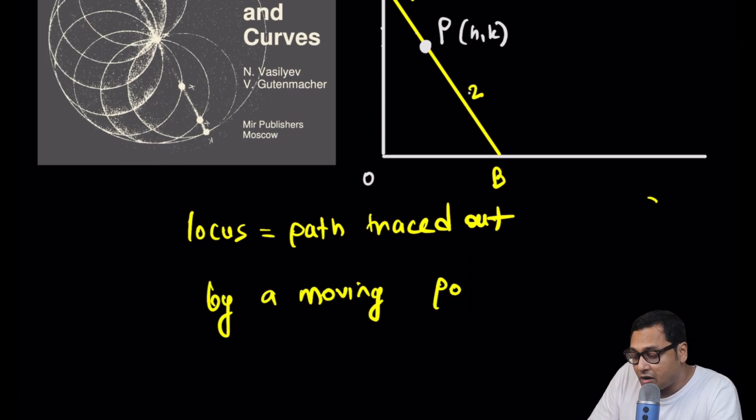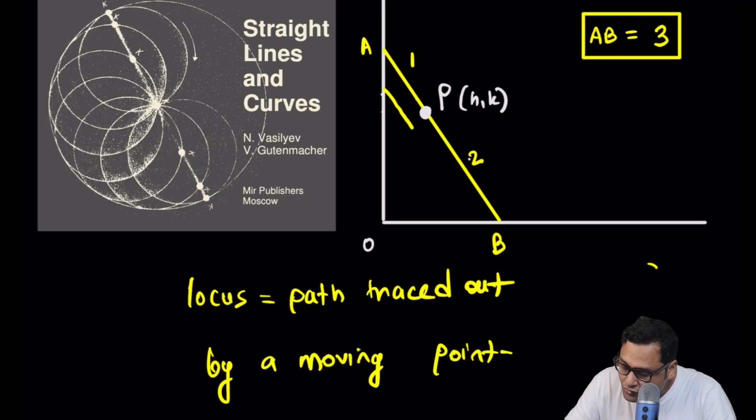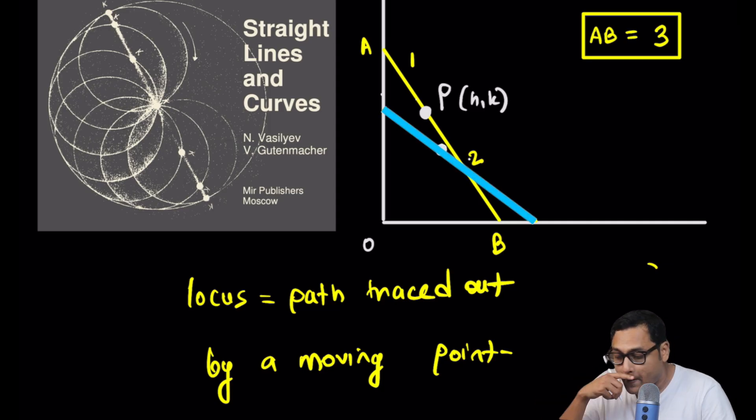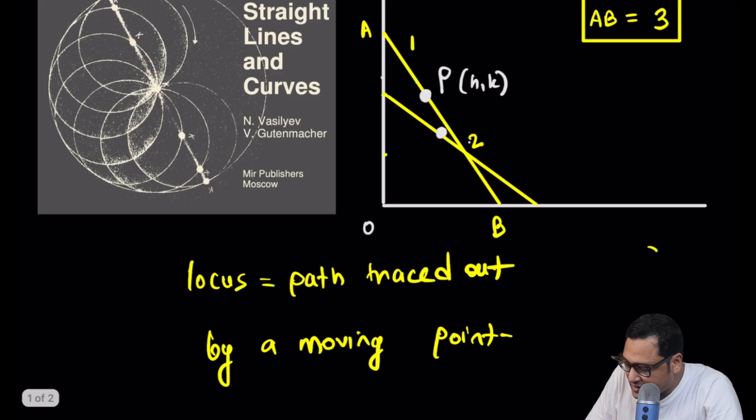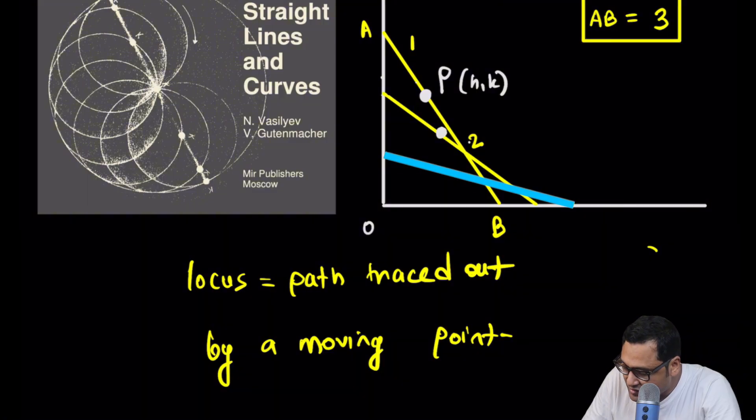One way to think about it is that you have to imagine this ladder slipping. You can draw a few positions of the ladder, then draw the position of point P. The point P continually divides AB into a 1:2 ratio, so it is fixed on the ladder. But as the ladder slips, point P also moves. You can draw the next position of the ladder, and imagine all the positions of point P together in a single picture. The question is: what is the equation satisfied by these positions of point P, or the equation of that continuous curve?